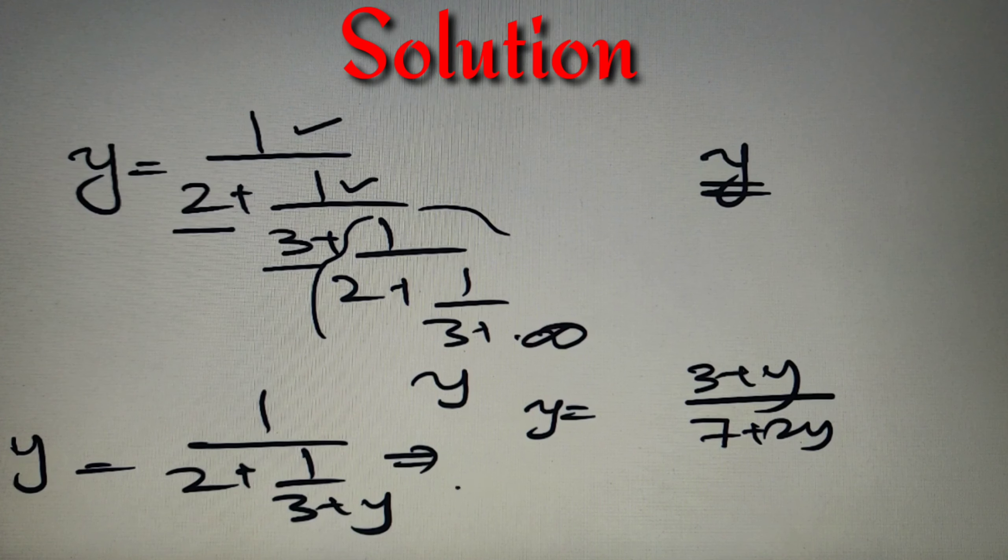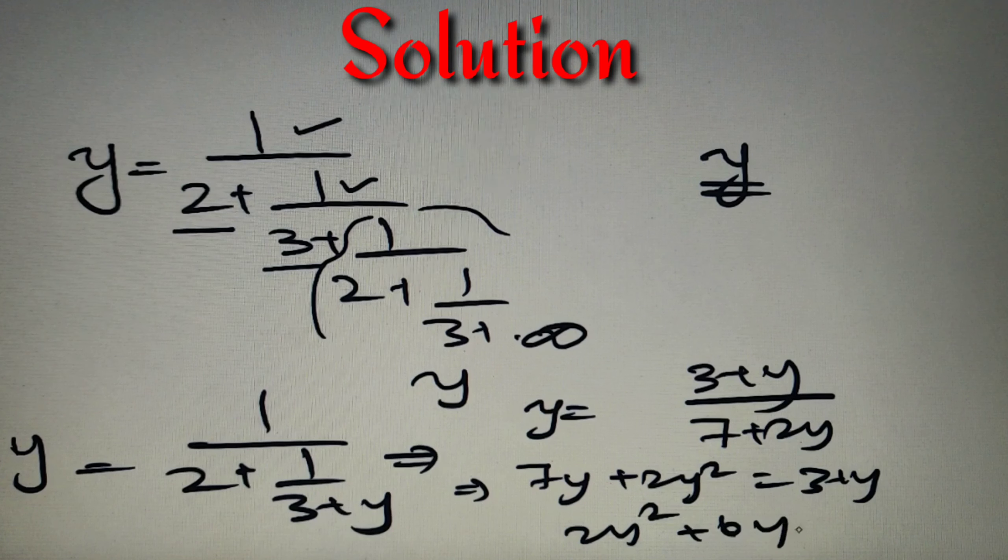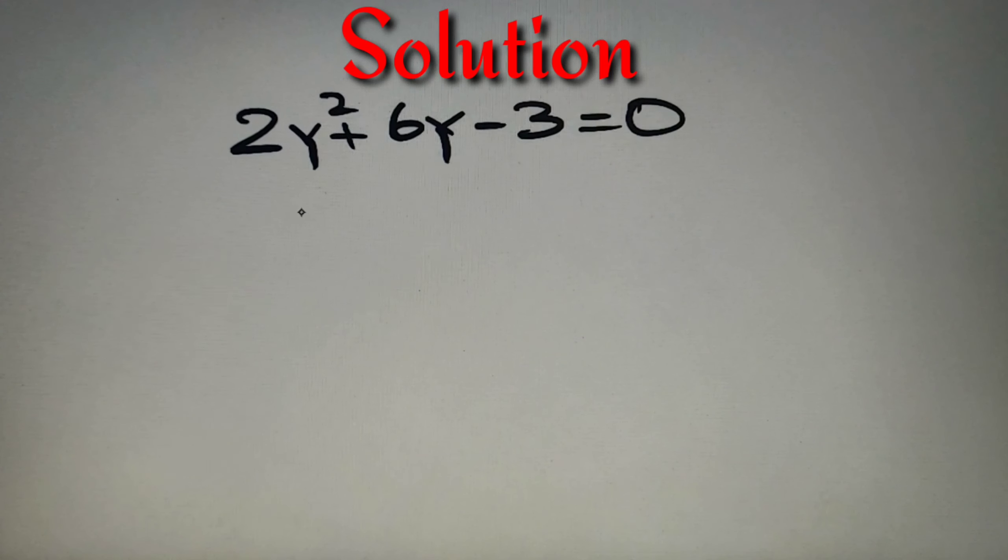Now we only have to cross multiply to find the value of y. So if we cross multiply, we will get 7y plus 2y square is equal to 3 plus y, or finally we can say that 2y square plus 6y minus 3 is equal to 0.